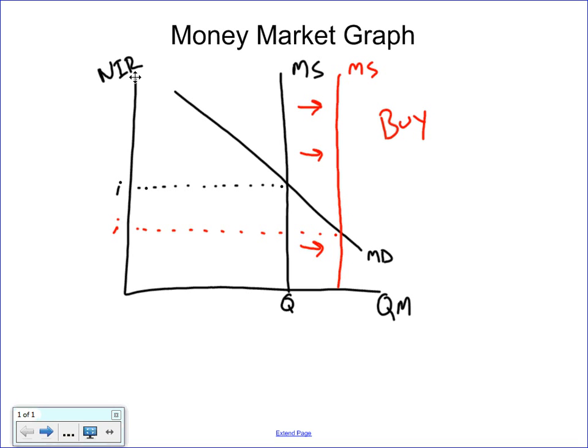However, if the Federal Reserve decides that they want to have what's called tight policy or contract the economy, what they will do is they will decrease the supply of money, so it'll look something like this. Call this MS2, now we're going this way. And now you'll notice what has happened to our nominal interest rate - it has increased. It has increased from our original line.